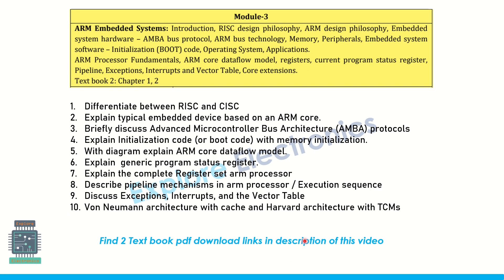Coming to module 3, which is embedded systems with ARM processor. The basic question you may get is the difference between RISC and CISC processors. A typical embedded device based on the ARM core and advanced memory bus architecture — that is AMBA protocols — you may expect this question. There are three AMBA protocols to explain in brief. Explain initialization code (boot code) with memory initialization. With a diagram, explain the ARM core data flow model. Then the generic program status register can be asked.